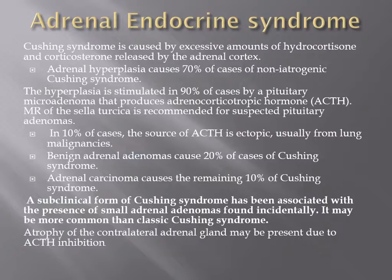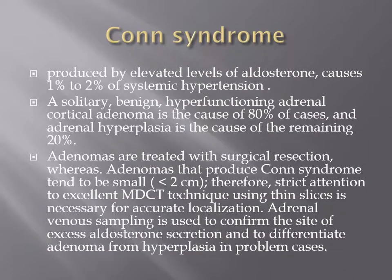Cushing syndrome is caused by excessive hydrocortisone and corticosterone levels. 70% of cases are due to adrenal hyperplasia, 20% due to adrenal adenoma, and 10% due to adrenal carcinoma. The most common cause of adrenal hyperplasia is pituitary microadenoma, so MRI of the pituitary gland should be performed. Another 10% are caused by ectopic ACTH production by lesions such as lung cancer. A subclinical form of Cushing syndrome has been associated with small incidentally found adrenal adenomas.